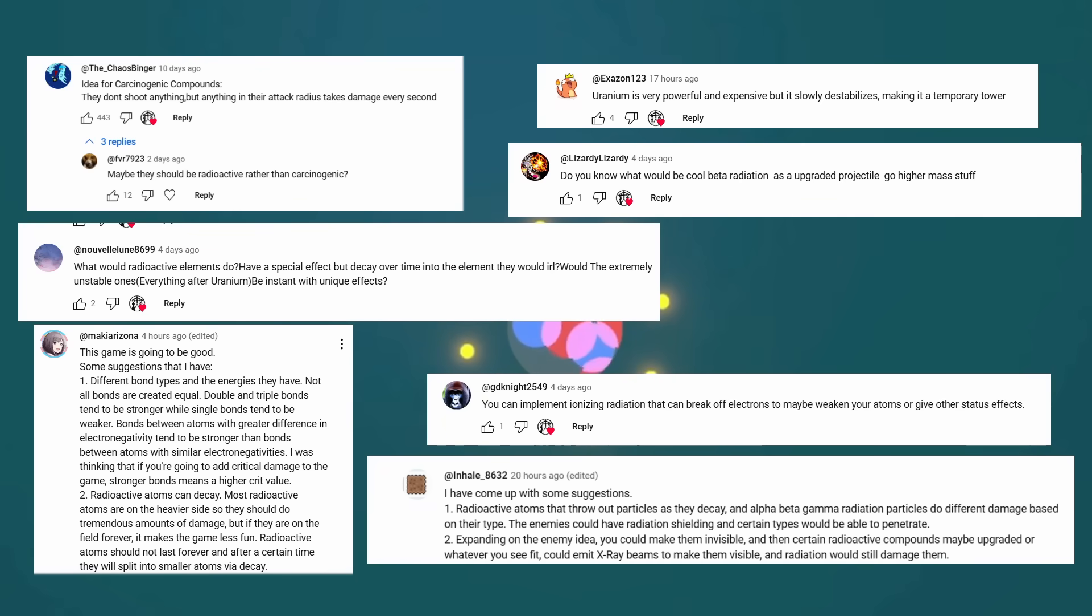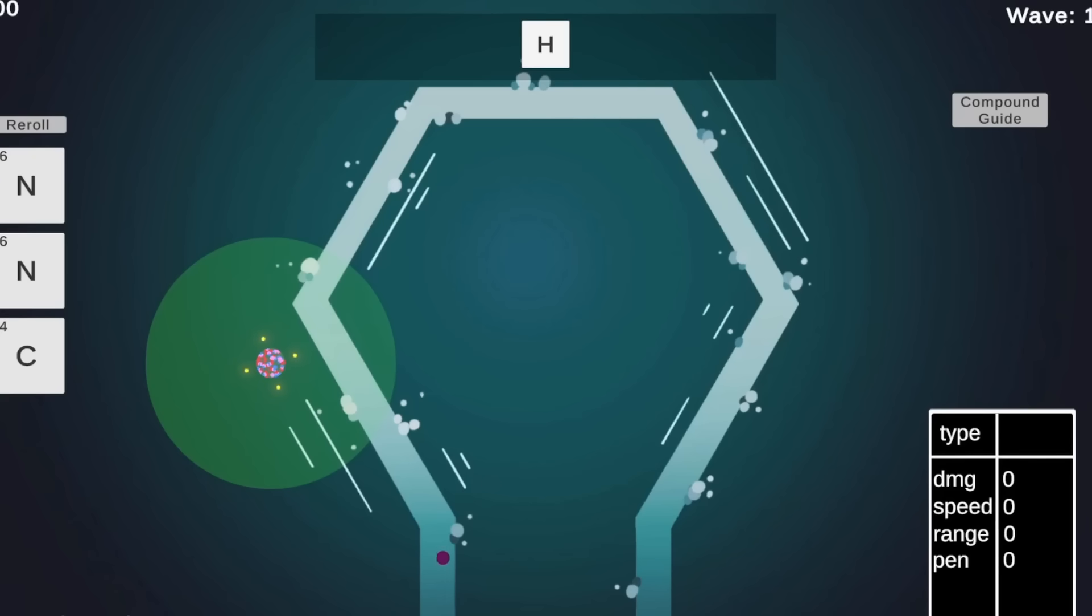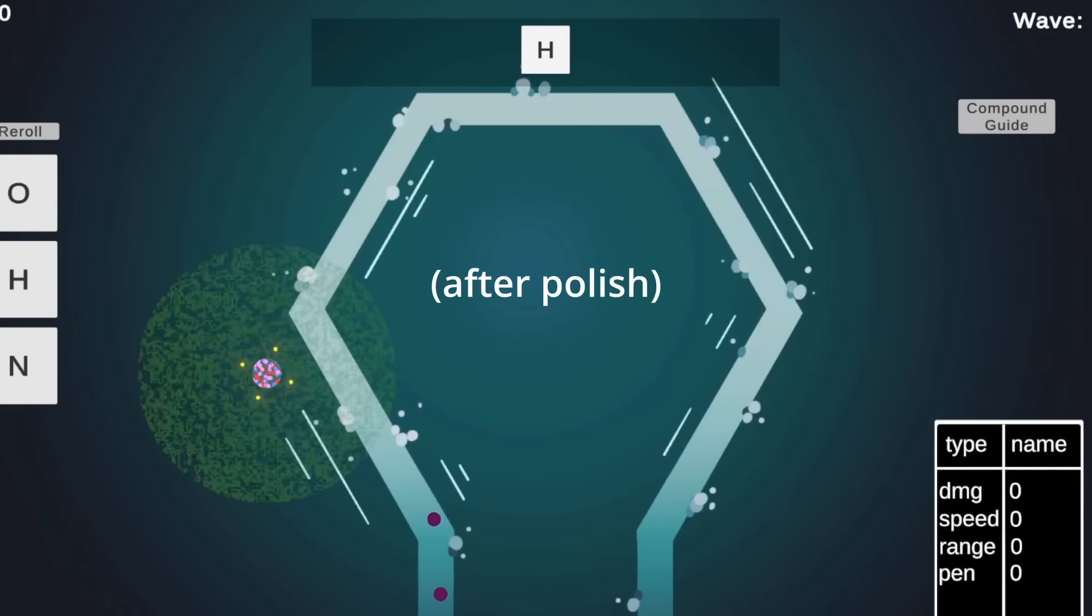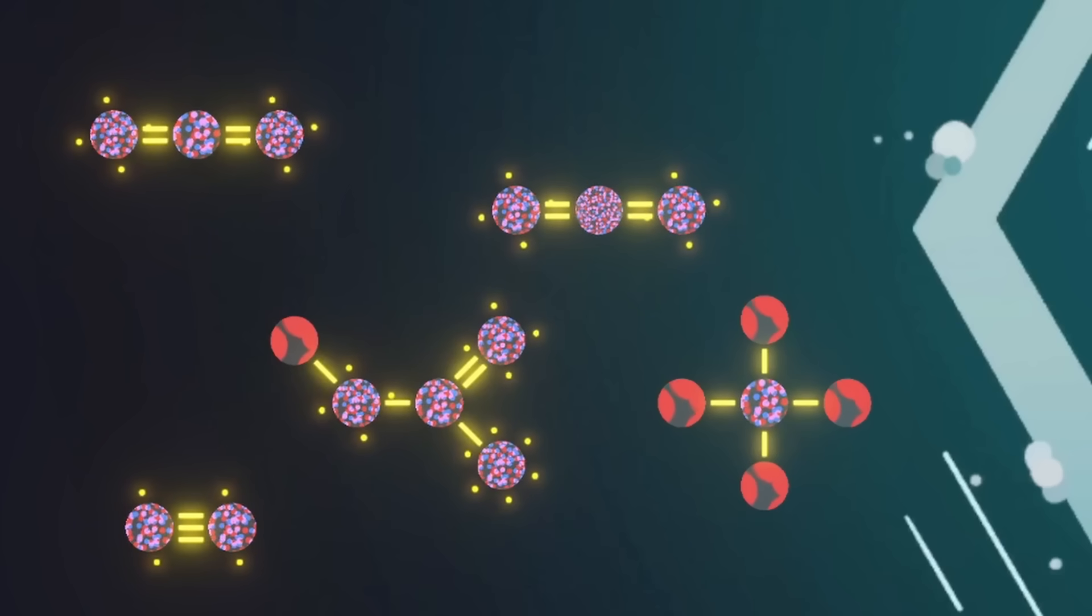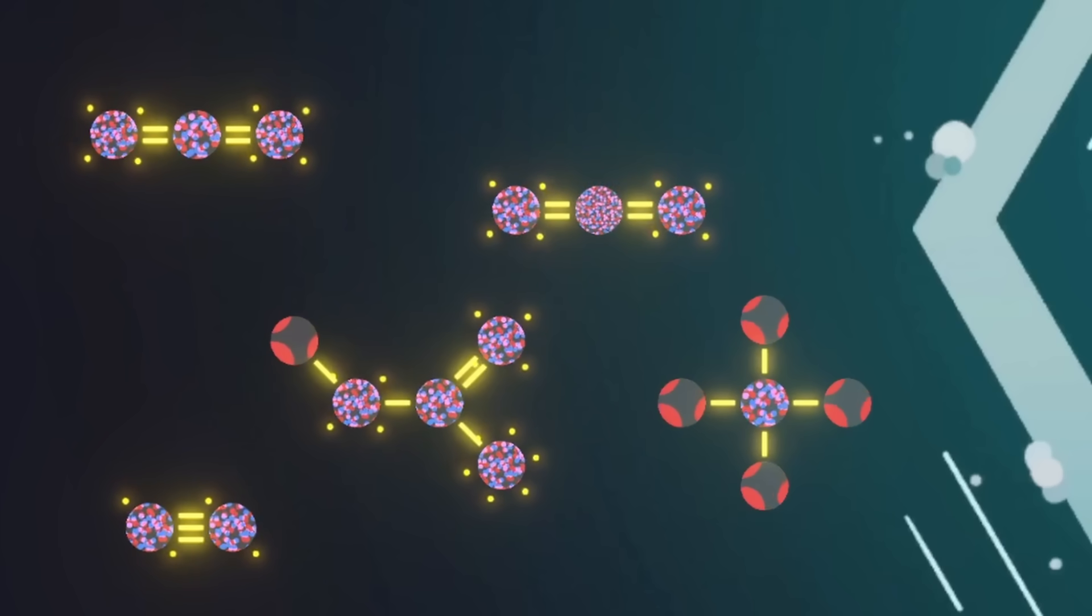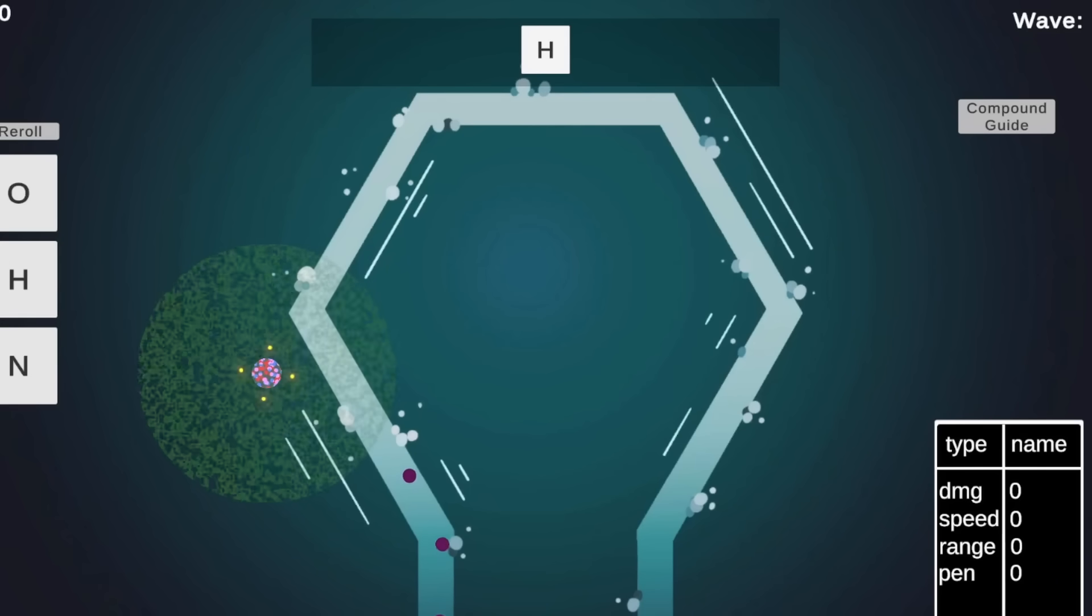A highly requested mechanic was radiation. There are a few different approaches that were suggested for how to handle it, and I decided to go with a large AoE field that does damage to everything inside of it. Now you may be wondering, which atoms have this radiation damage? Well, I could have added in atoms like uranium that would constantly have this effect, but a lot of atoms that are radioactive in their most common state don't fit super well into the combination structure I have in place. I ended up combining some ideas and used this mechanic in a way that I'll expand on in just a minute.